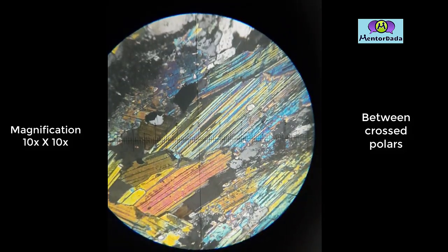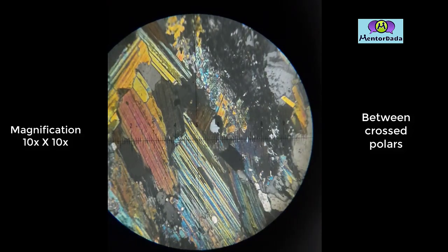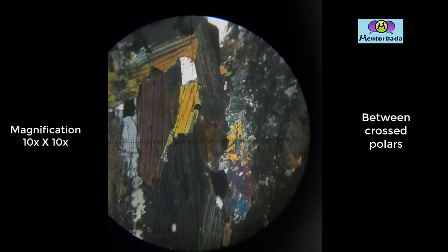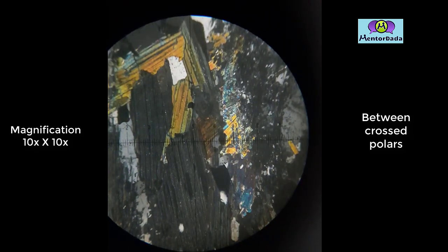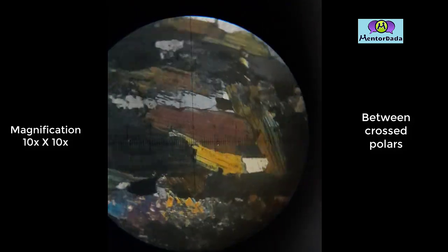Twinning has not been found. So from all these properties under plane polarized light and between cross polars, we can conclude that the mineral is muscovite.